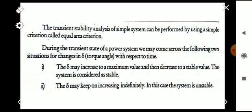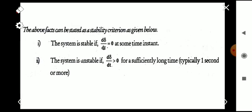During the transient state of a power system, we may come across two situations for changes in delta — the torque angle with respect to time. The first case is that delta may increase to a maximum value and then decrease to a stable value, so the system is considered stable. The second case is that delta may keep on increasing indefinitely, in which case the system is unstable.